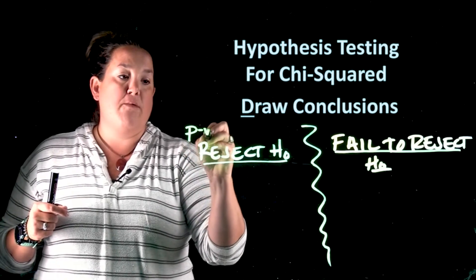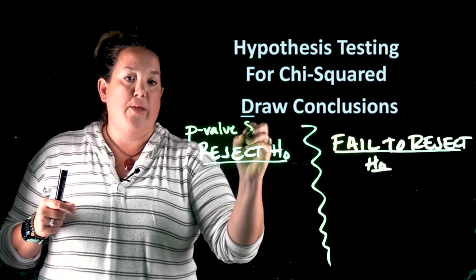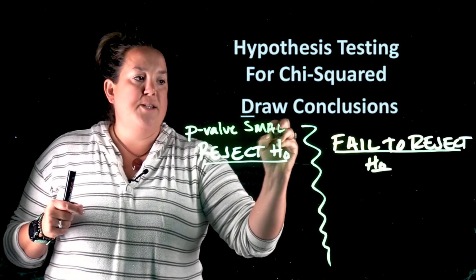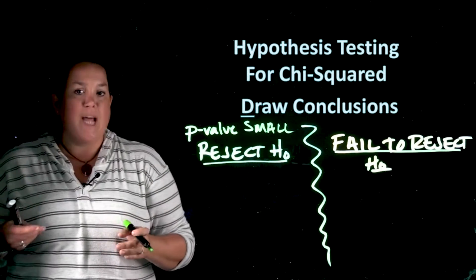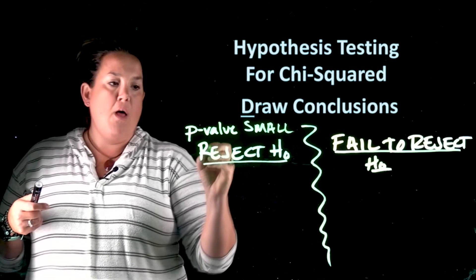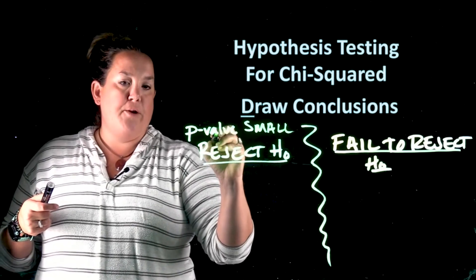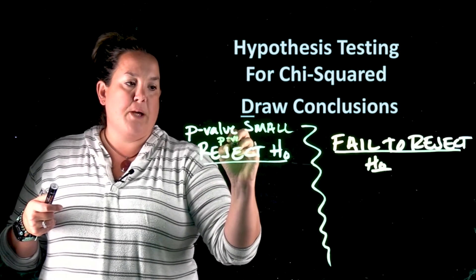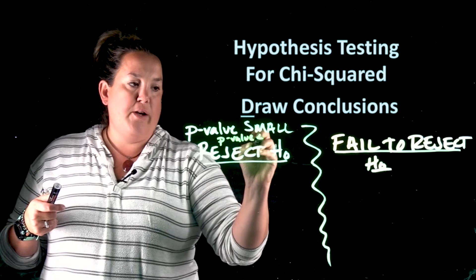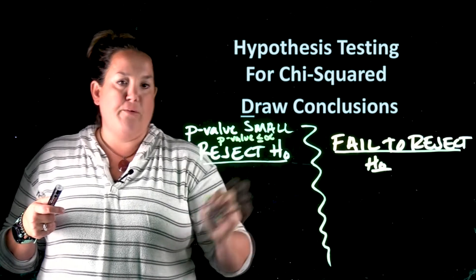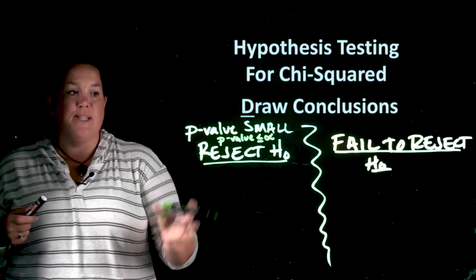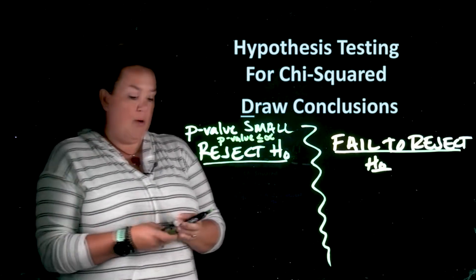Now when you reject the null, this happens if you have a small p-value. So p-value that is small, and if you need to, you can decide if the p-value is small by comparing the p-value to alpha. If it's less than or equal to alpha, which is that level of significance, you can say that it's small.